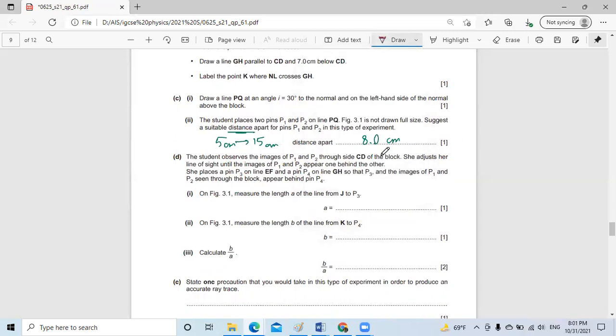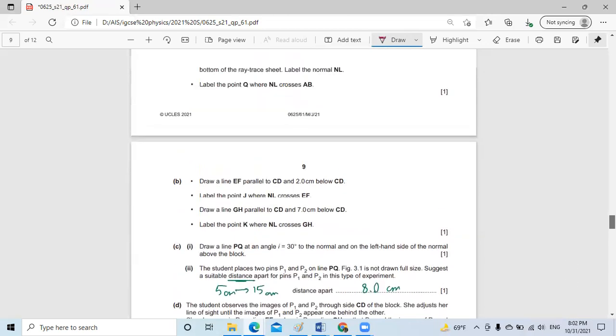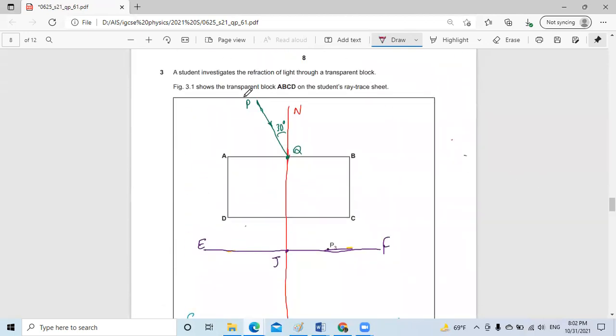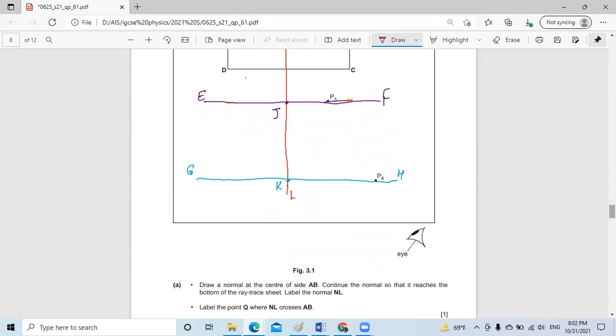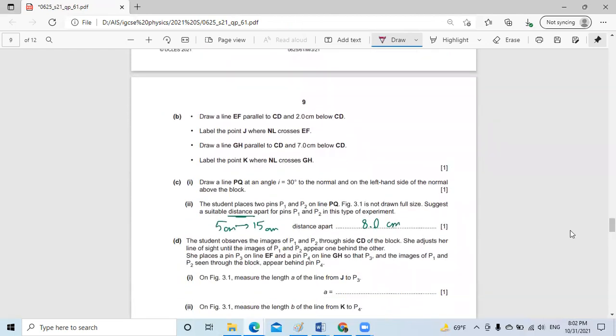They say that the student observes the image of P1, P2 through the side CD. They are just to be images appearing behind each other. She places the pins P3 and P4 on the line EF and the line GH. So P3 and P1 and P2 appear behind P4 as it seems here. So all the pins P1, P2, P3, and P4 have to be seen behind each other from the eye position.